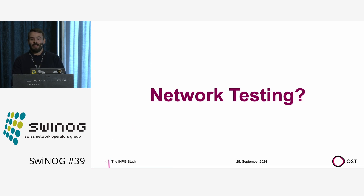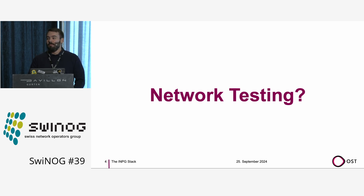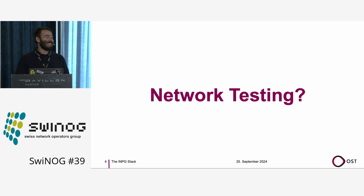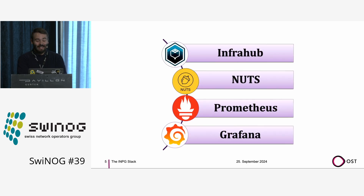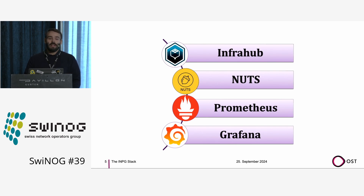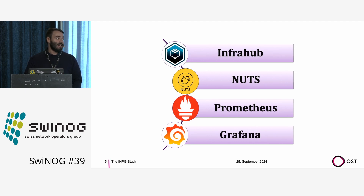Today we're going to talk about network testing. I think everybody tests their network — everybody does ping, traceroute, whatever. Some people have automated testing, some people do not test, and some people test in production. Let's try to change that. I created four tools, kind of a tool chain, which allowed me to generate a baseline of tests for a network, so we can test without too much trouble and don't need to do it manually. As you might notice, IPNG — I just took the first letters. Some people say engineers are creative. Sometimes we're not.